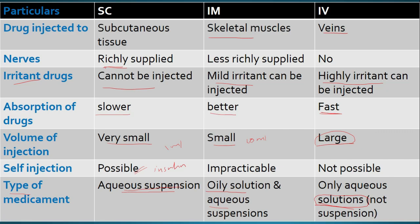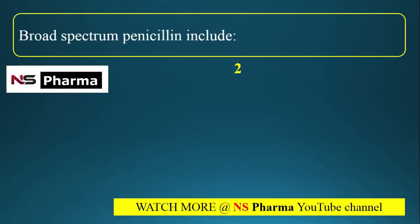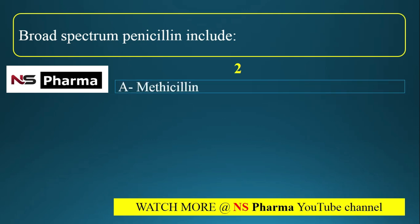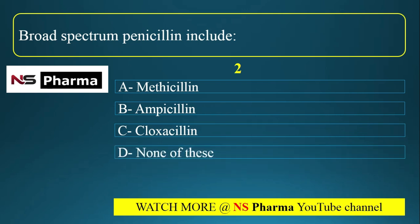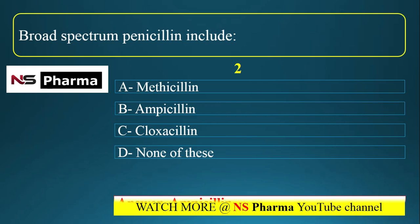Now we are going to the second question: broad spectrum penicillin includes which of the following? Options are: option A, methicillin; option B, ampicillin; option C, cloxacillin; option D, none of these. The correct answer is option B, that is ampicillin. Ampicillin is a broad spectrum penicillin.